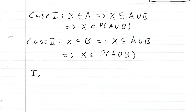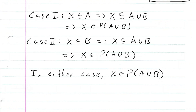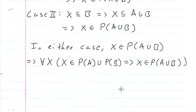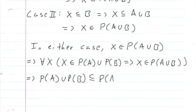So in either case, X is an element of the power set of A union B. What we have is that for every set X, X being an element of the power set of A union the power set of B implies that X is an element of the power set of A union B. And if we have this statement, this means that the power set of A union the power set of B is in fact a subset of the power set of A union B. And that is what we set out to do — that is our proof.